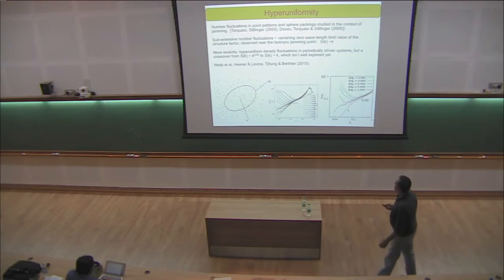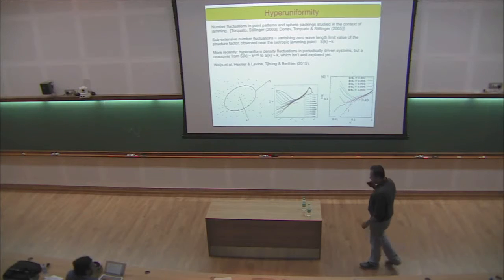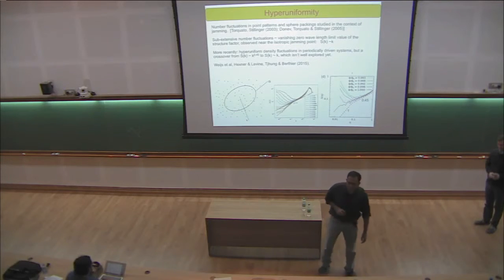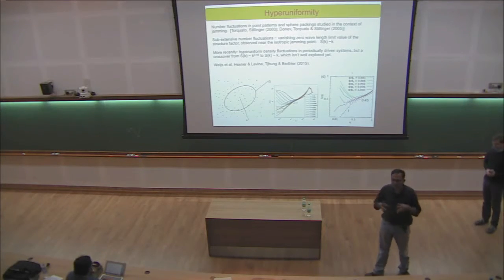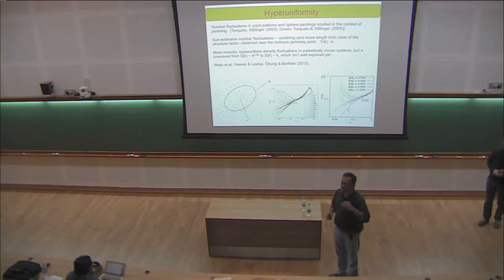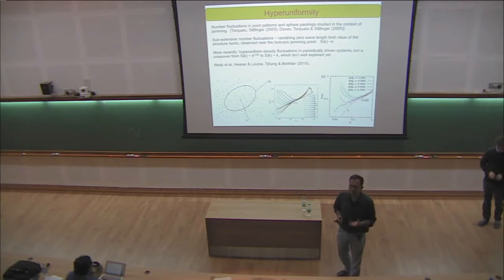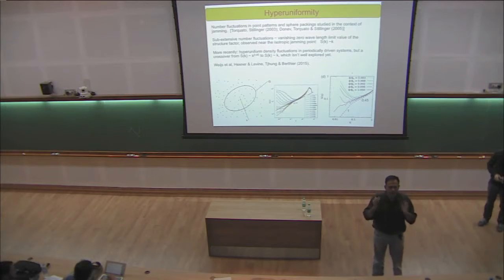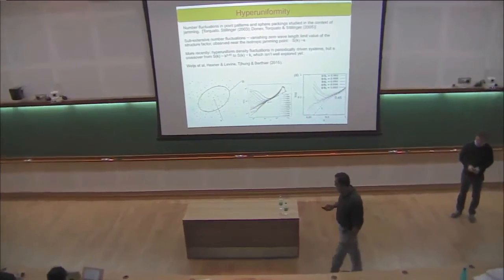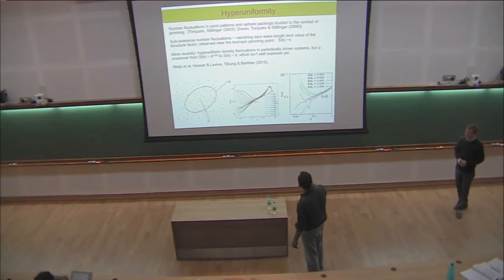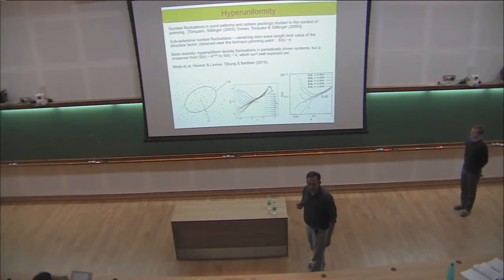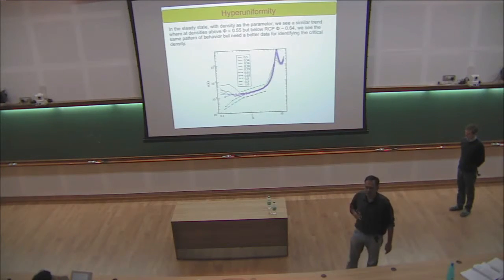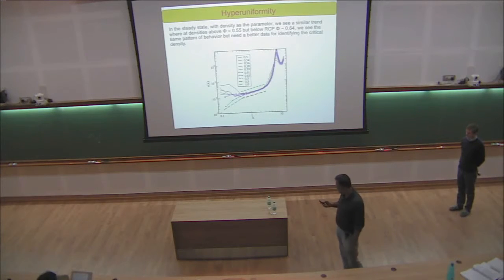One of the key geometric features looked at near jamming is hyperuniformity. The basic idea is if you look at long wavelengths in jammed systems, density fluctuations go to zero. The structure factor scales linearly or some power of K. This has recently also been seen in periodically driven systems. What we see is that in our shear jammed systems as well, there are signatures of hyperuniformity.